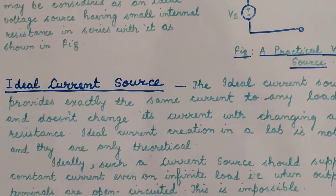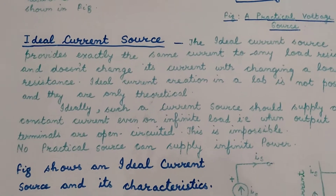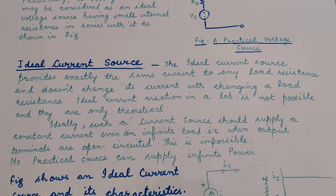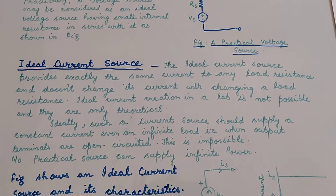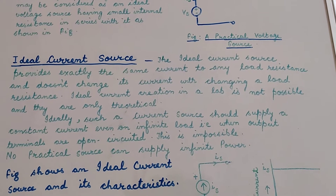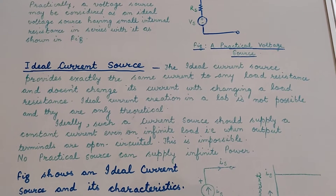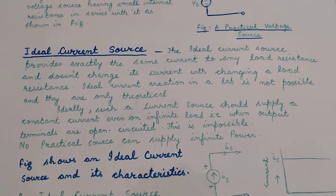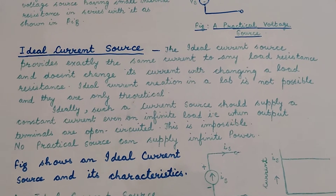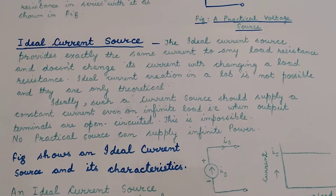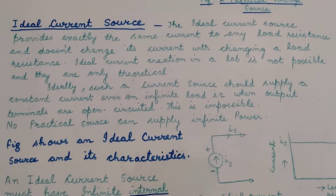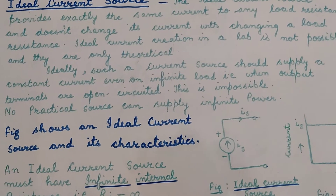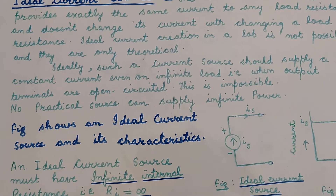Now let us move on to the next type of source, which is an ideal current source. The ideal current source provides exactly the same current to any load resistance, and it doesn't change its current with a change in the load resistance. There is no source which can be called an ideal current source, and such a source is only possible if it has an infinite resistance connected across it.